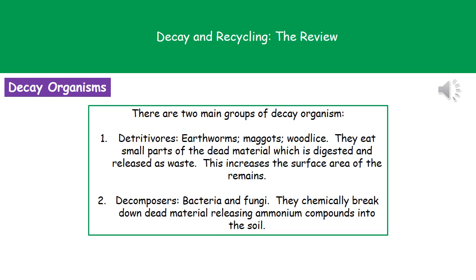There are two main groups of decay organism. The first are called detritivores — things like woodlice and earthworms. What they do is eat small parts of dead material; inside their body it is digested and then released as waste. As a result of this, they increase the surface area of the dead material.